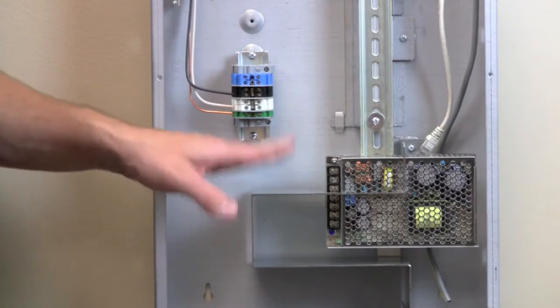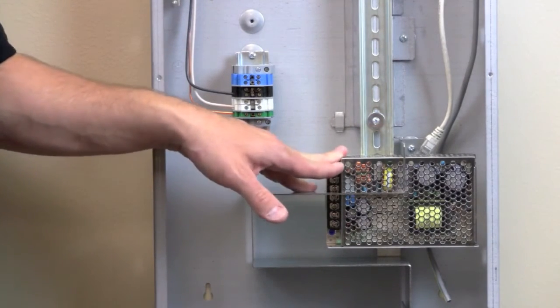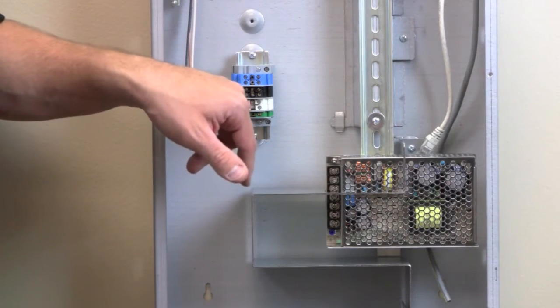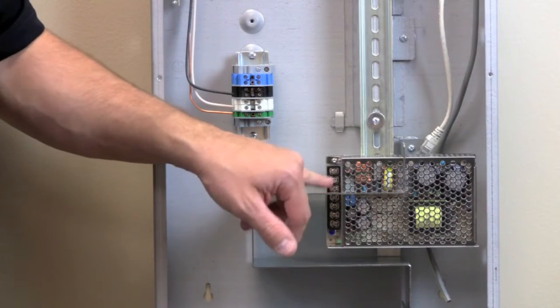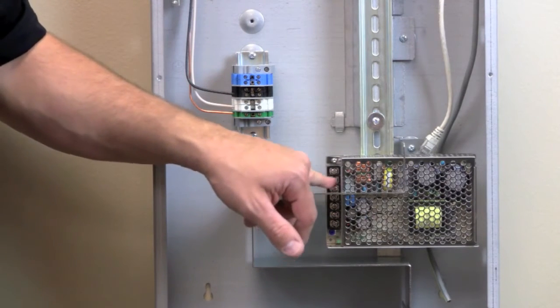Now that we have the mounting bracket with the power supply installed, we're going to go ahead and have the electrician wire from the terminal block to the high voltage side of the power supply.